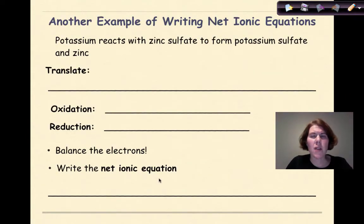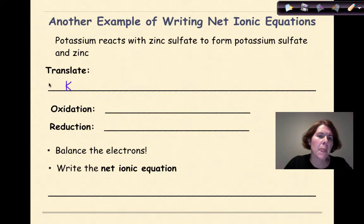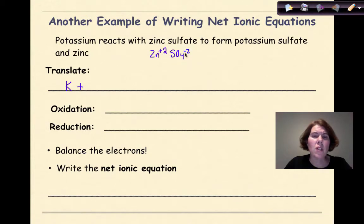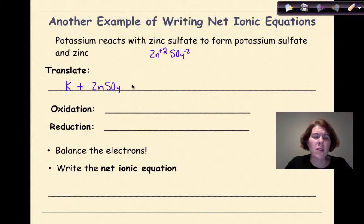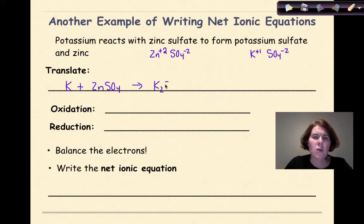Let's do another example of writing a net ionic equation, and this time we're going to start out with a word equation. Potassium reacts with zinc sulfate to form potassium sulfate and zinc. I know that potassium is just the symbol K. Reacts with is going to be a plus sign. Zinc is Zn, and when it's part of a compound it's going to be plus two. I know from table E that sulfate is SO₄ minus two, so these two charges are going to cancel each other out and I'm going to have ZnSO₄. To form is an arrow, and potassium sulfate — potassium is K plus one, sulfate is SO₄ minus two, so my formula is K₂SO₄ — and then finally plus Zn.